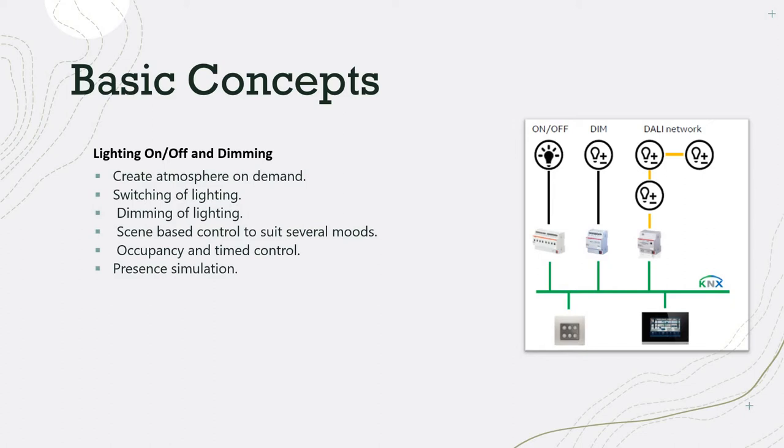Lights can also be controlled through scenarios. You can have several modes — for example, party mode, movie mode, birthday mode — and you can link them with other applications. This is the beauty of home automation. In your living room, if you have a party, you can just press or initiate the scenario and automatically the lighting will go to a certain ambience as set for that party.